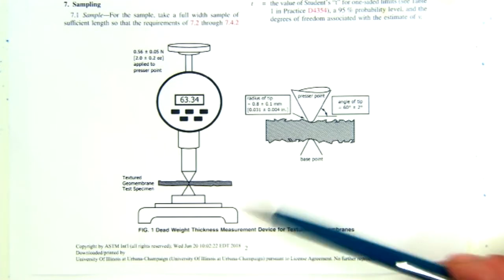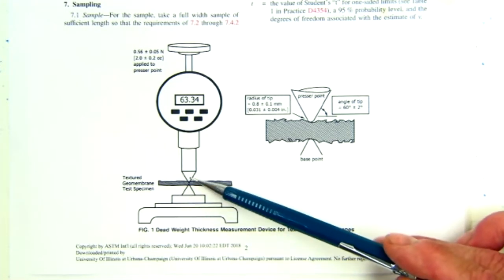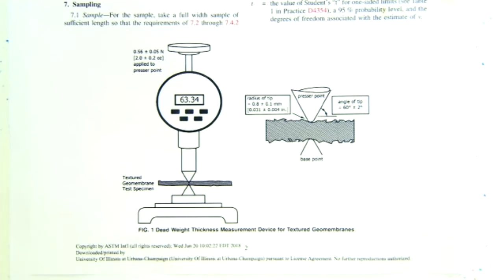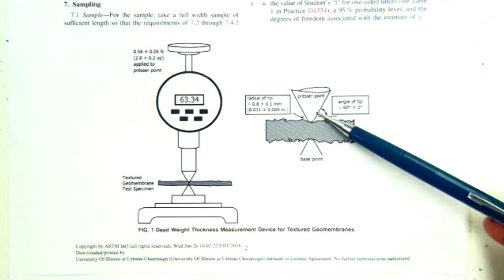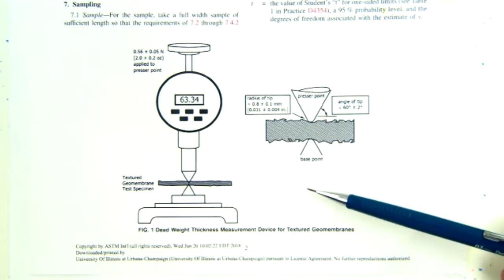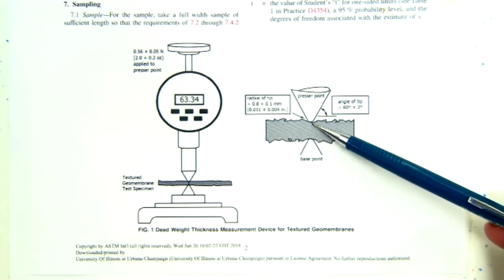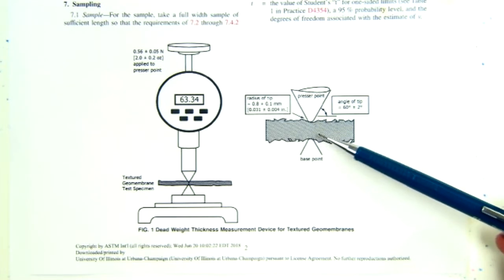The two metal points penetrate the texturing to measure the core thickness of the geomembrane. This is a close-up of the two points, which are hardened steel. The remaining thickness where I'm pointing to is the core thickness of the textured geomembrane.